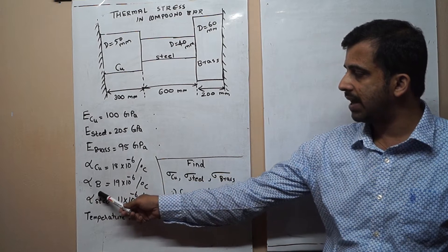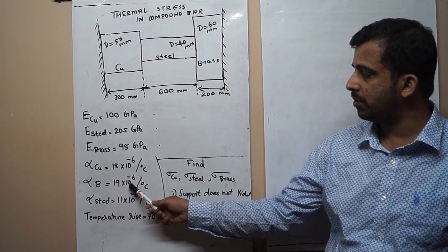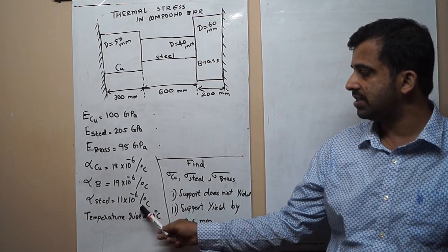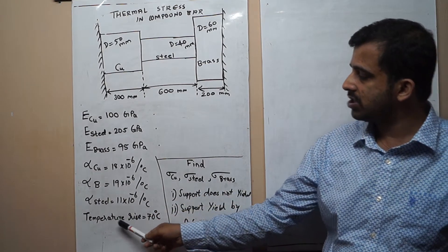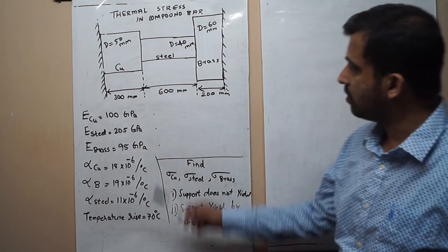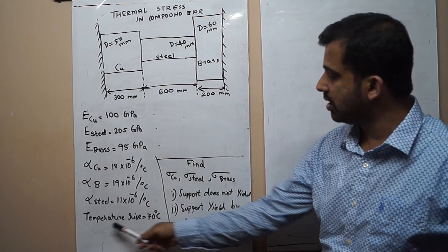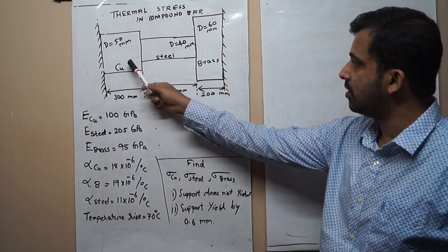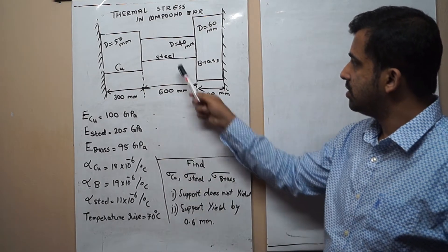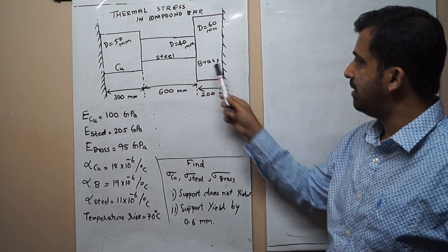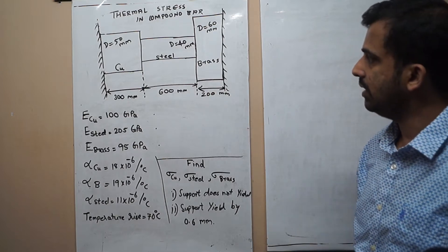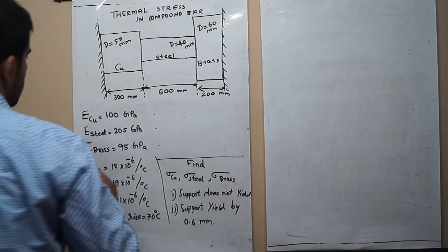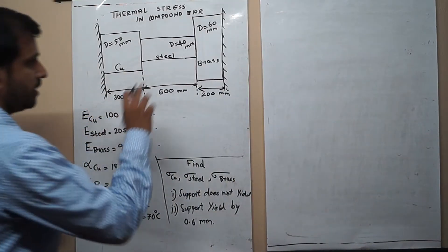The coefficient of linear expansion for copper is 18 × 10⁻⁶ per °C, for brass is 19 × 10⁻⁶ per °C, and for steel is 11 × 10⁻⁶ per °C. For a temperature rise of 70°C, we need to find the thermal stress generated in the copper, steel, and brass sections.